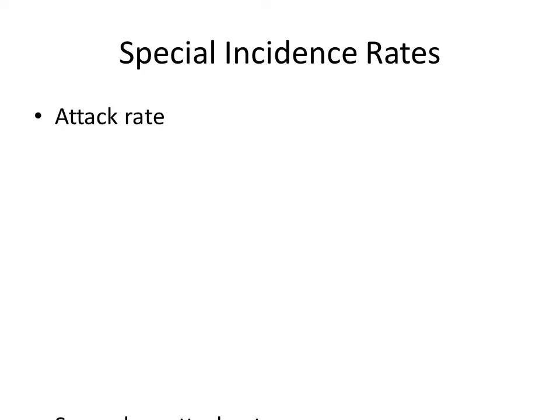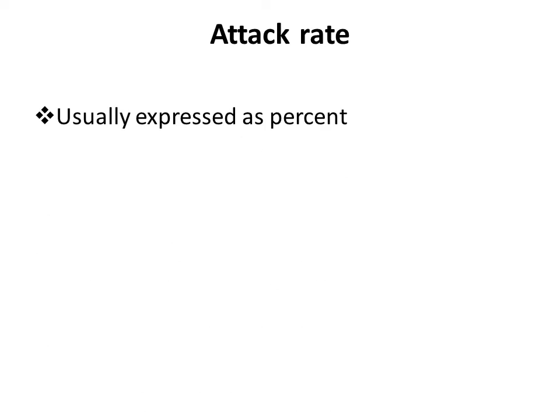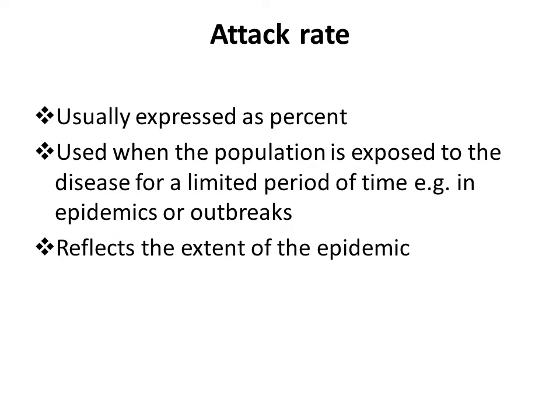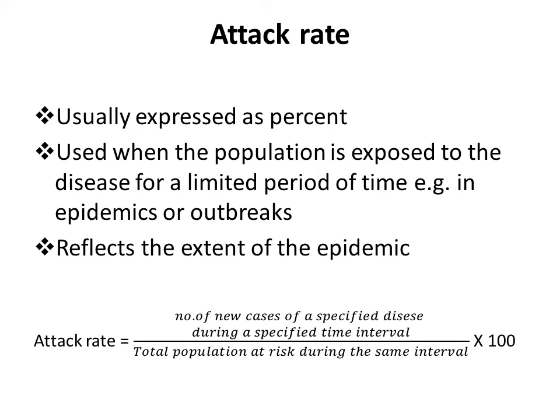Some special incidence rates need mention: the attack rate and secondary attack rate. The attack rate is usually expressed as a percent, not per thousand, and is used mostly when a population is exposed to a disease for a limited period — for example, during an epidemic or outbreak. It reflects the extent of the epidemic. The formula is: number of new cases of the specified disease during a specified time interval, divided by the total population exposed and at risk, multiplied by 100.